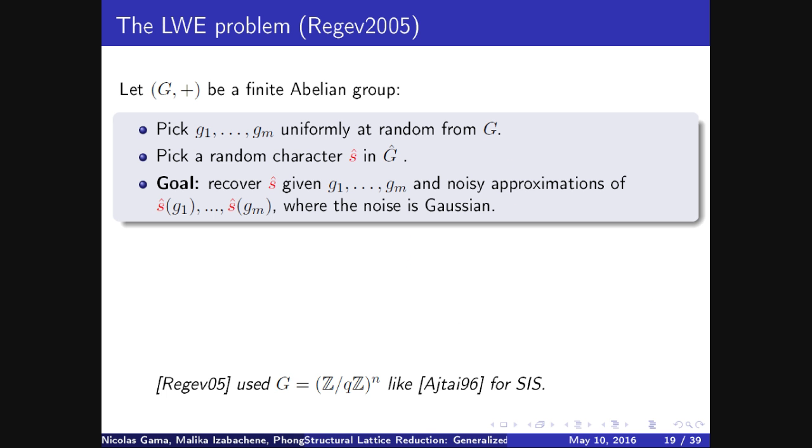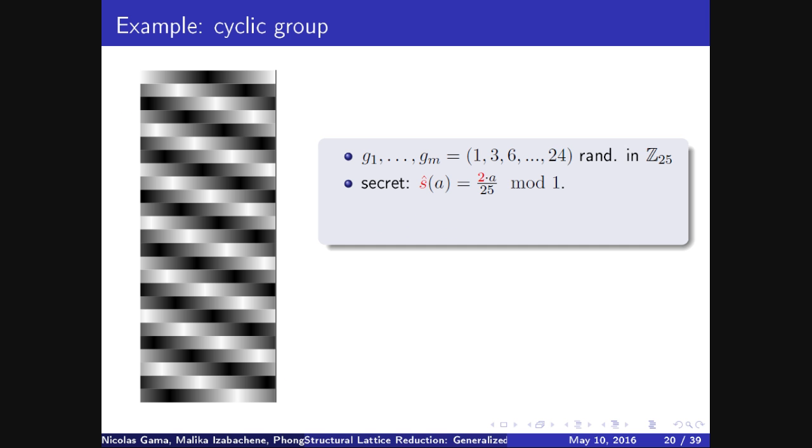Now that we know that, the LWE problem is: you pick M elements in a group. You choose a random secret character in the dual group, and the goal is, if I give you M evaluations of this character with some Gaussian noise, can you recover this character? So in 2005, Regev defined it using the special groups Z/QZ to the N, like Ajtai did for SIS, but it can be generalized for every Abelian group.